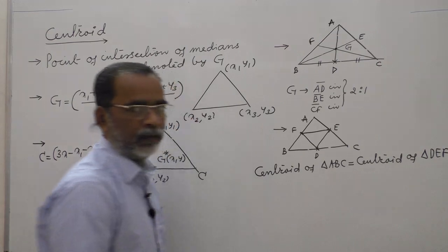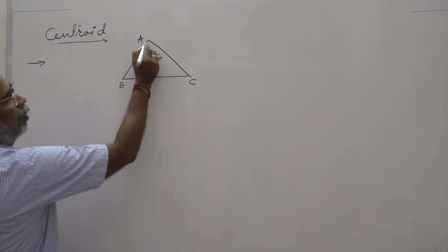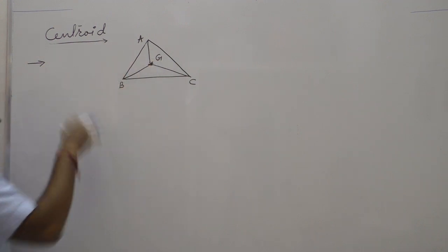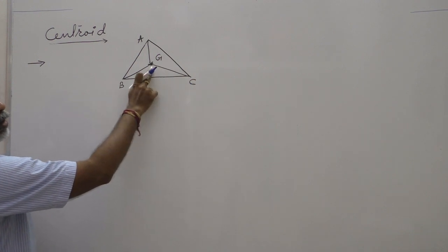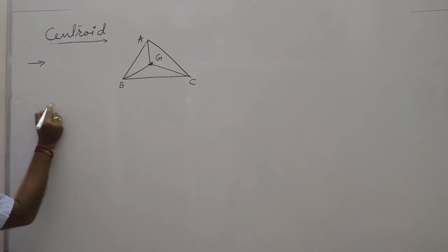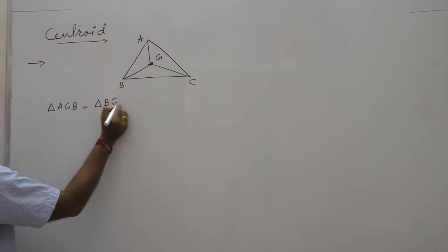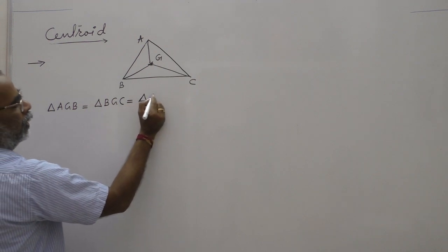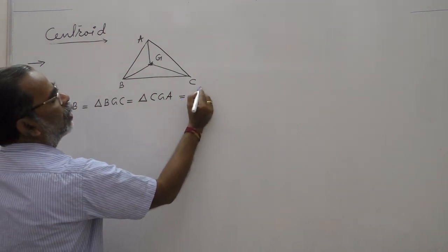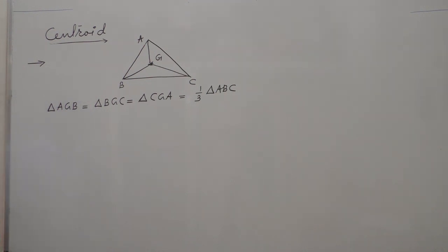If G is the centroid of triangle ABC, it divides the triangle into three triangles of equal area. That is: area of triangle AGB = area of triangle BGC = area of triangle CGA. Each of these three triangles has area equal to one-third of the area of triangle ABC.